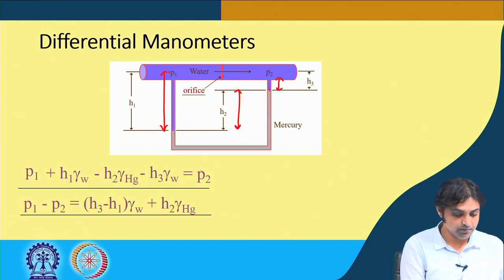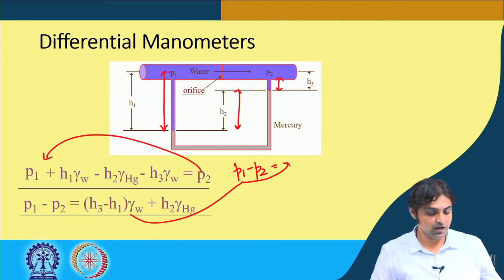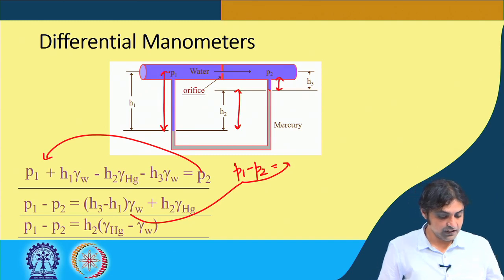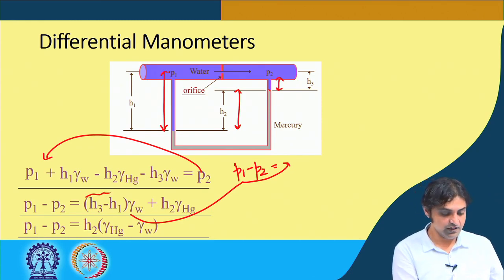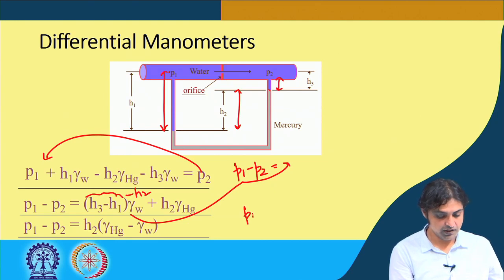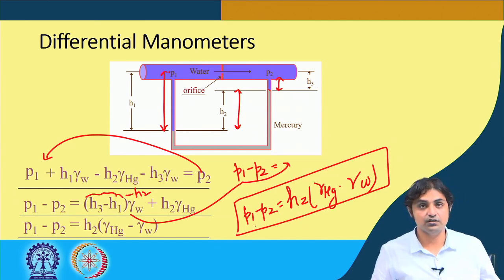Rearranging, P1 minus P2 equals H3 minus H1 times γw plus H2·γHg. Since H3 minus H1 equals H2, we can simplify: P1 minus P2 equals H2 times (γHg minus γwater). This is the pressure difference — a very simple result for differential manometers.